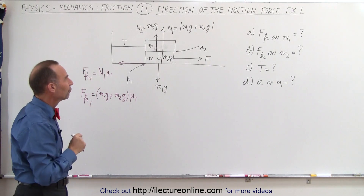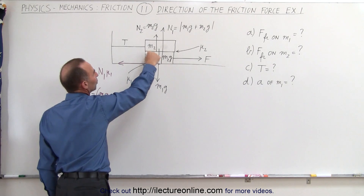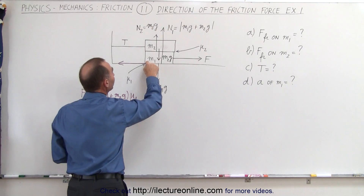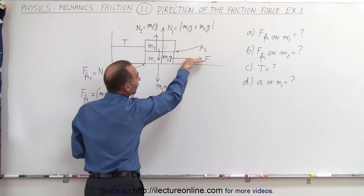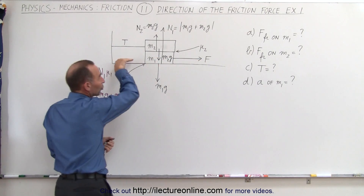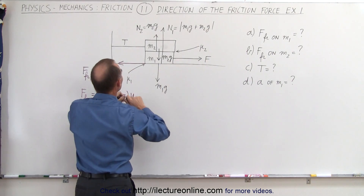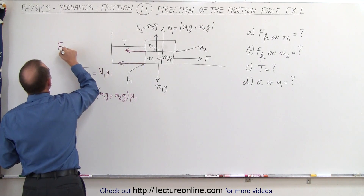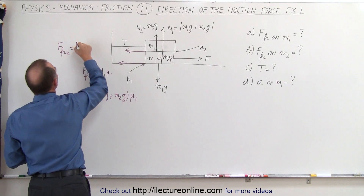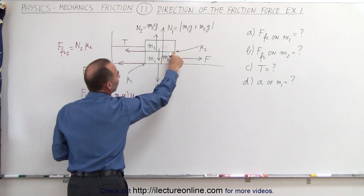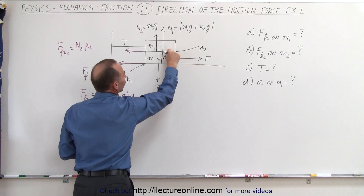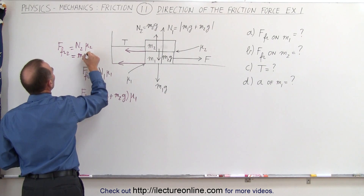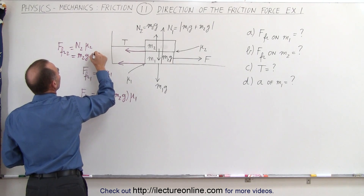That's not the only friction force on M1. There's also a friction force between M1 and M2 at their shared surface. Since M1 is moving to the right, this second friction force also acts to the left on M1. We call this friction force 2, equal to N2 times mu sub 2. Since the normal force here is caused by the weight of M2, this gives us friction force 2 = M2G times mu sub 2.